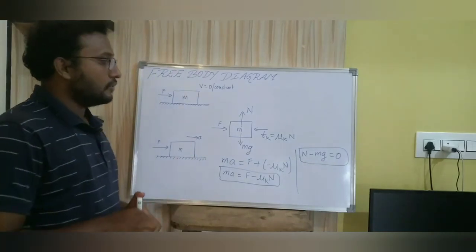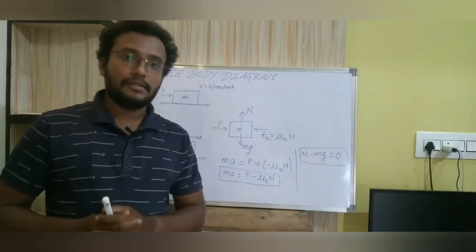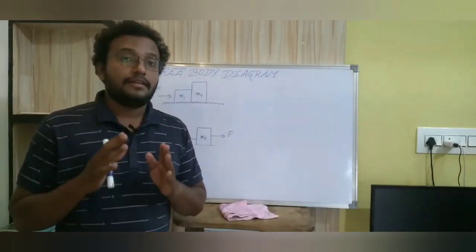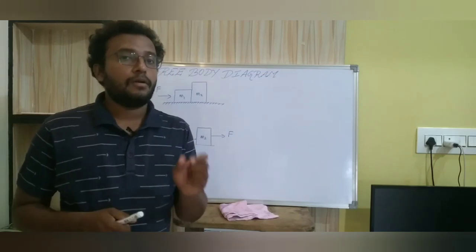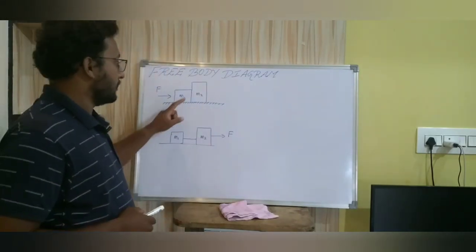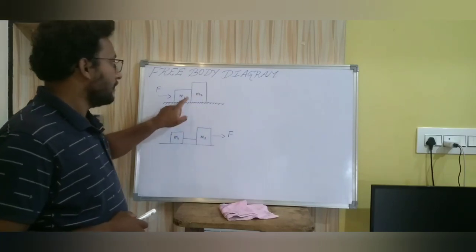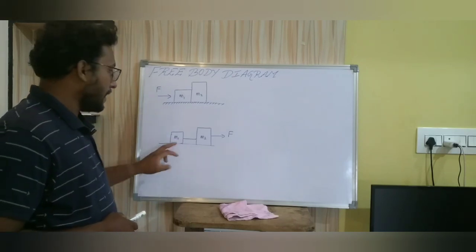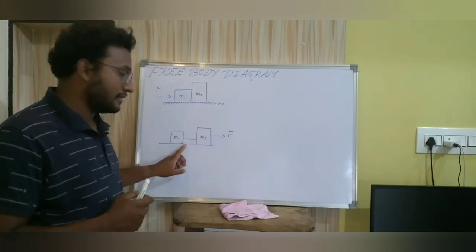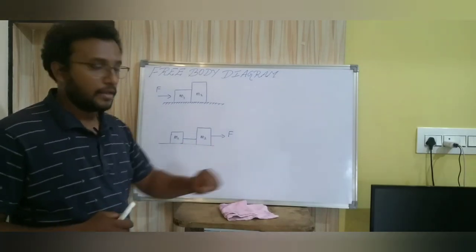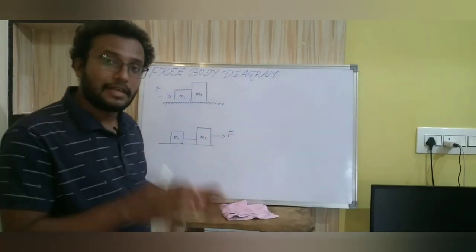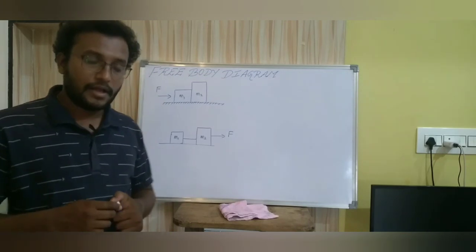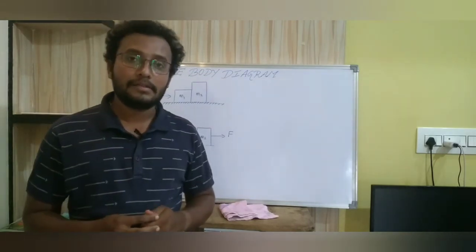These two examples are the simple cases showing us how to use the free body diagram. In the next video, we will be looking at more complex systems, such as two blocks on a surface in contact with each other with an external force applied, and two blocks connected with a massless and inextensible string being pulled. I hope you understood the concepts — thank you.